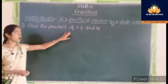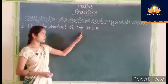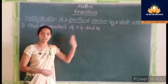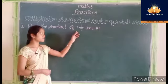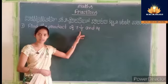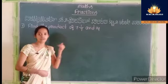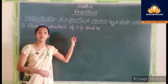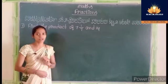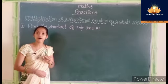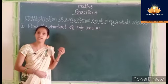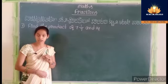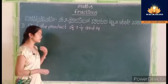Find the product of 7 and 1 upon 7 and 14. Students, here 7 and 1 by 7 is a fractional number, and also this is a mixed fraction. We have to convert the mixed fraction into an improper fraction.